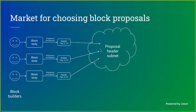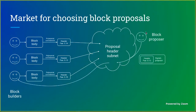Then there is the block proposer — the actor that has ultimate choice about what gets included. Block proposers look at all of these headers and take the one with the highest fee. They sign it and republish the signed header into the proposal header subnet.